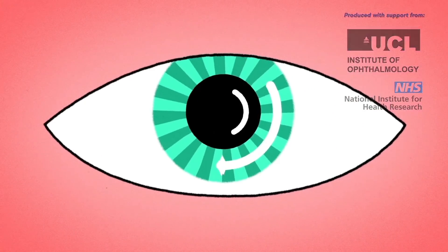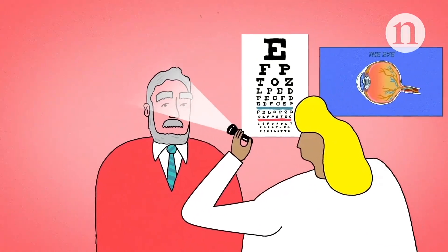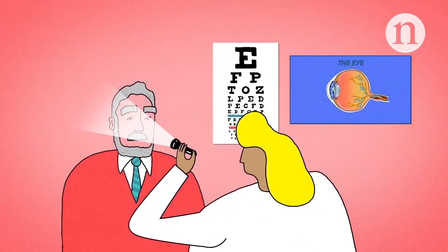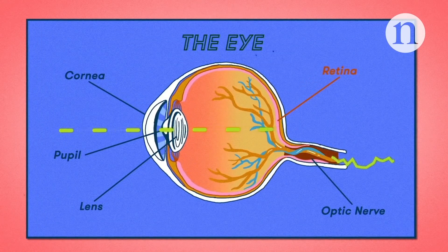The eyes are our windows onto the world. By far the most sophisticated component of the eye is the retina, the thin layer of tissue at the back that converts light into chemical and electrical signals.